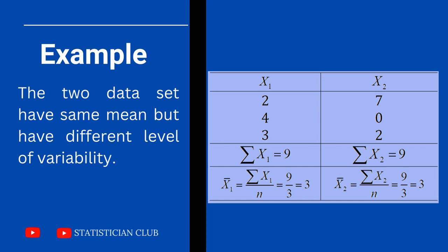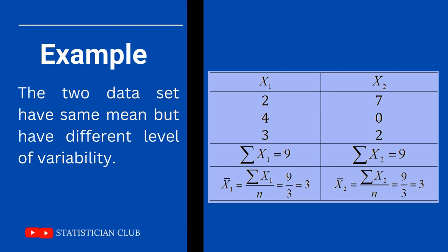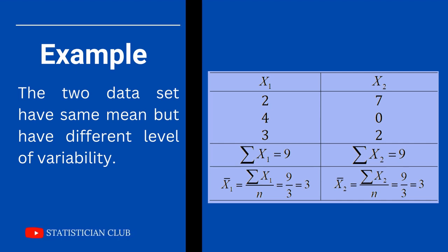Here is data set x2: 7, 0, 2. The sum of x2 is also equal to 9. So the two data sets have the same mean — x̄₁ and x̄₂ are both equal to 3 — but the two data sets have different levels of variability.